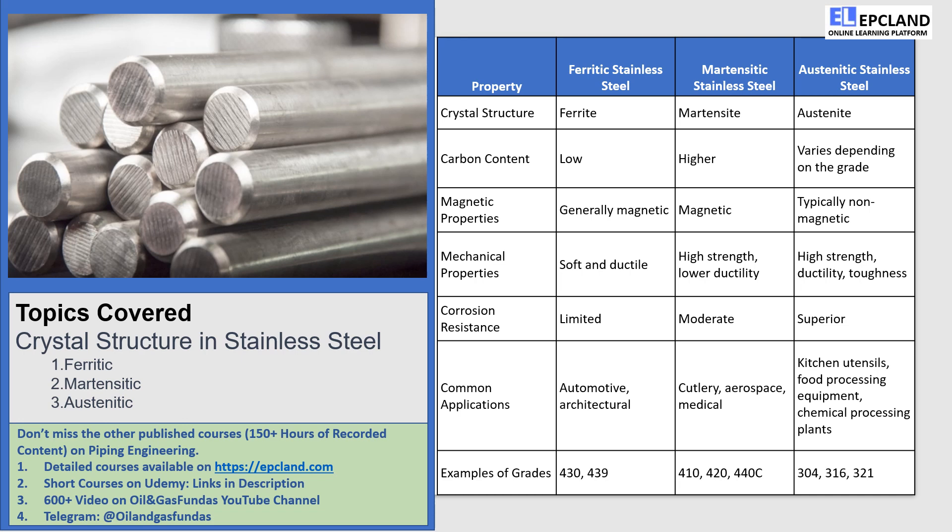Our first type of stainless steel is ferritic stainless steel. This type of steel has a ferrite crystal structure, which means it has limited carbon content and is soft and ductile. Ferritic stainless steel is magnetic and isn't recommended for high temperature settings. It has limited corrosion resistance and average durability. Some common applications include automotive and architectural uses.